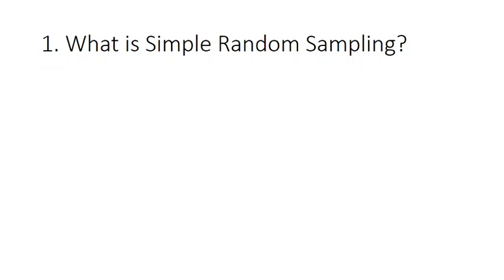How does it work? Say there are 500 students. You cannot simply pick one or two — there must be a proper random process. You assign numbers to all 500 students, put them in a basket, and randomly draw numbers. Whoever is drawn becomes your sample. That is simple random sampling — randomly selecting participants from the population.